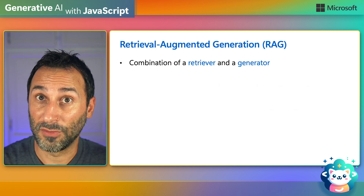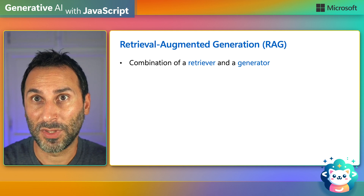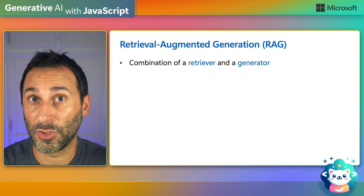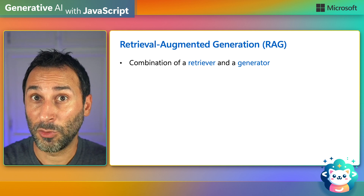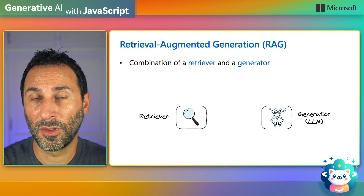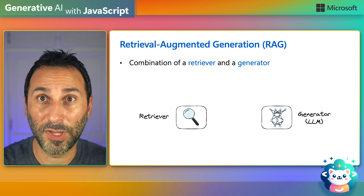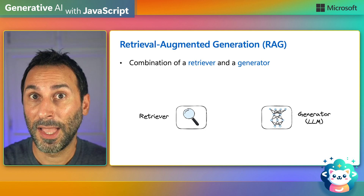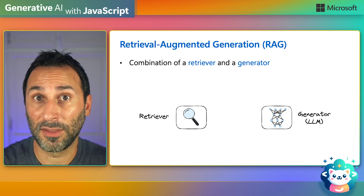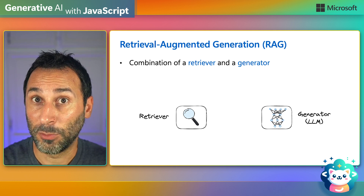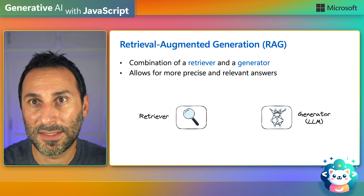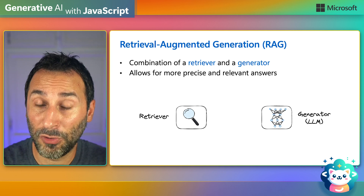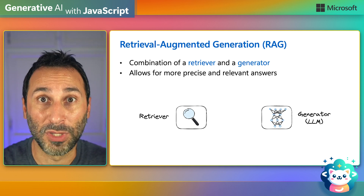To solve these issues, we can use a technique called Retrieval Augmented Generation, or RAG for short. RAG is a combination of two components: a retriever that fetches relevant information from a knowledge base that you control, and a generator that creates the answer. This combination allows for more precise and relevant answers by using data that you provide instead of relying on the model's training data.